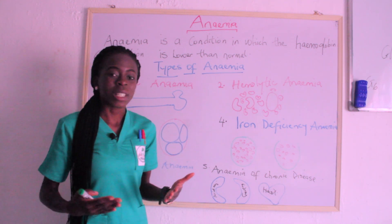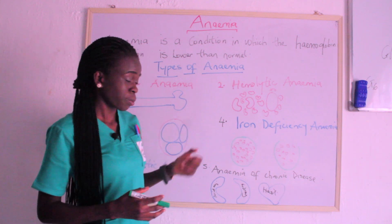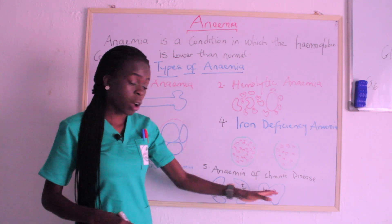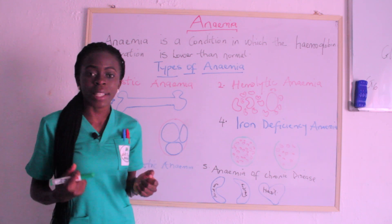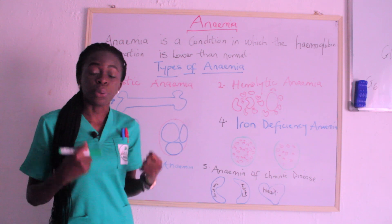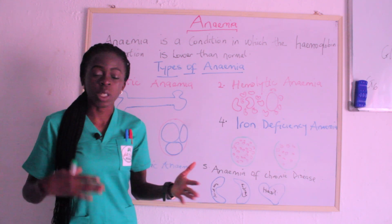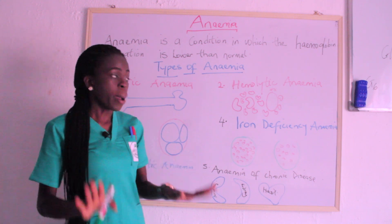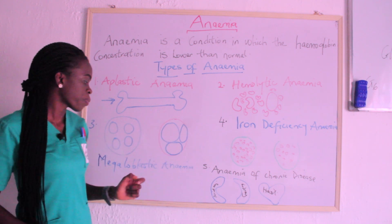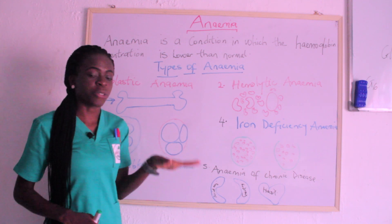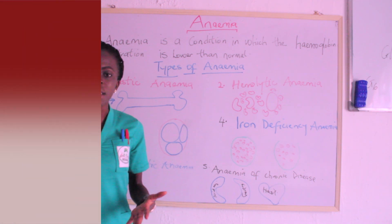The final type is anemia of chronic disease, which occurs as a result of an underlying condition. For example, infection, kidney disease, or heart disease can lead to anemia. In terms of kidney disease, when the kidney is affected, the production of erythropoietin is impaired. Erythropoietin is produced in the kidney and transported to the bone marrow, where it stimulates the bone marrow to produce enough red blood cells. So we have five types of anemia: aplastic, hemolytic, megaloblastic, iron deficiency, and anemia of chronic diseases.